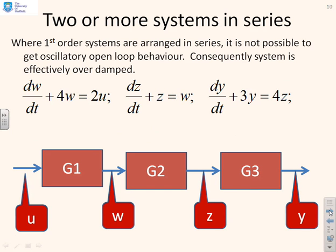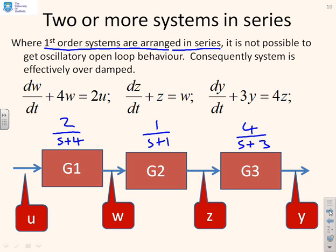Now, just a quick finish and aside, if you have lots of first-order systems arranged in series, as I have here, I can write g₁, for example, as 2/(s + 4), and g₂ is going to be 1/(s + 1), and g₃ is going to be 4/(s + 3). What you will find, if you want to find the transfer function, let's say between z and u, then you're going to have z equals g₁ times g₂ times u. And what do you notice? You're multiplying together two transfer functions, both with real poles, you will still have real poles.